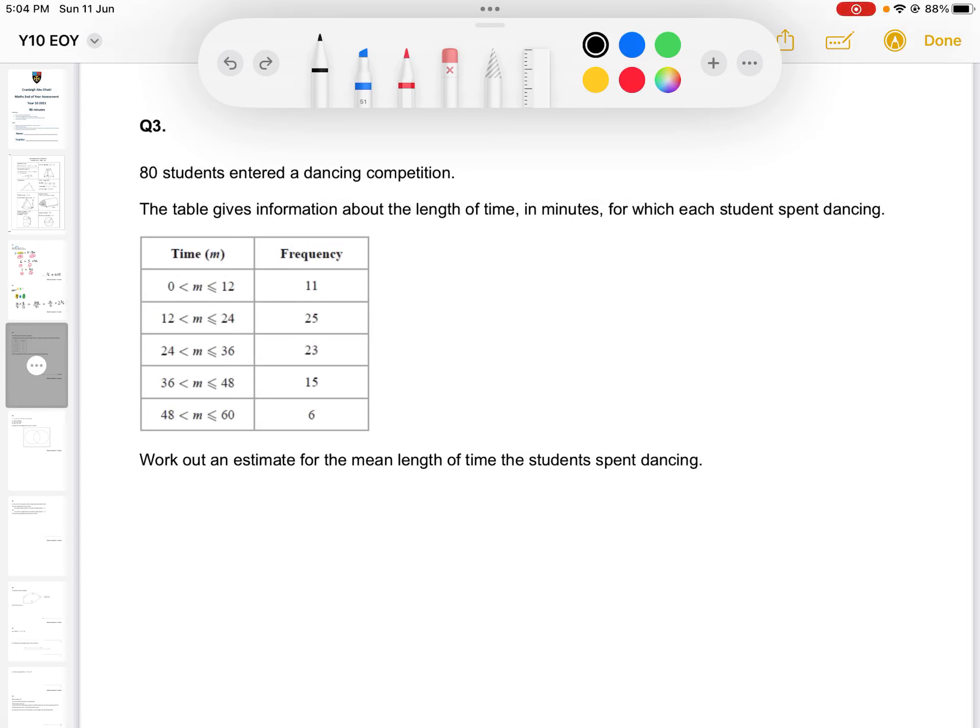Question three. 80 students entered a dancing competition and the frequency table here contains information about the length of time that they spent dancing.